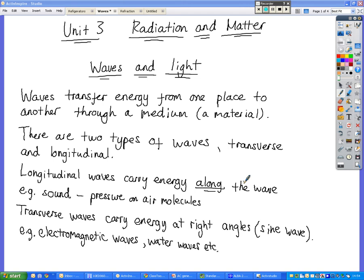Transverse waves carry energy at right angles to the direction of travel of the wave. So that's what makes the sine wave shape. They might be travelling forwards, the wave is carrying energy forwards, but the medium is disturbed up and down, up and down the wave.